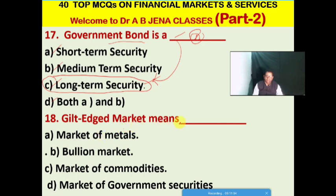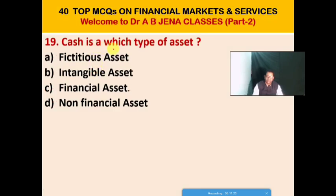Next MCQ: Gilts market means what? A: market of metals, B: bullion market, C: market of commodities, D: market of government securities. Next MCQ: cash is what type of asset? A: fictitious assets, B: intangible assets, C: financial assets, D: non-financial assets. C is the right option — cash is a financial asset.